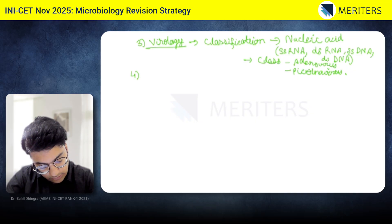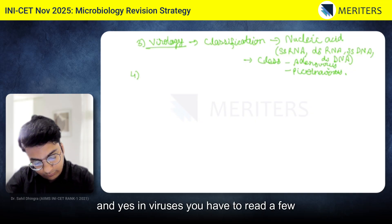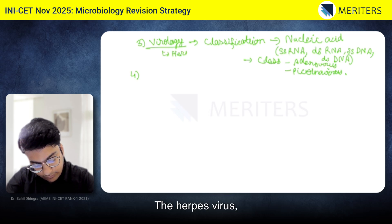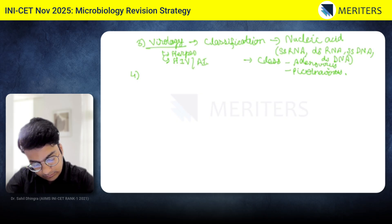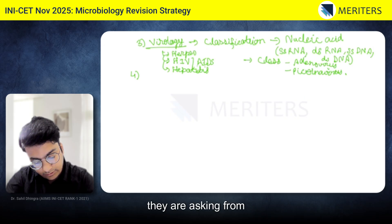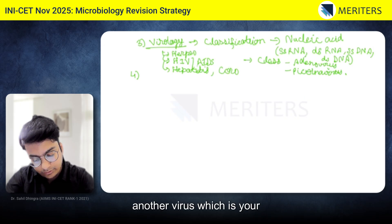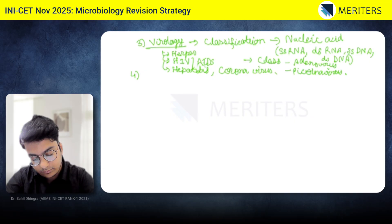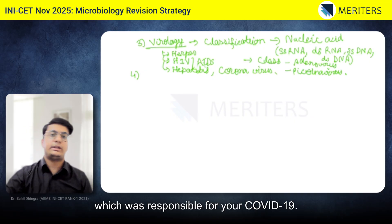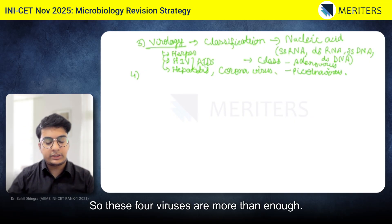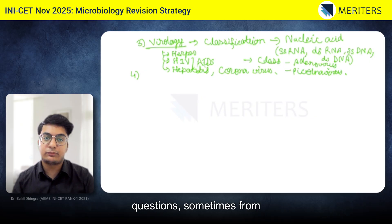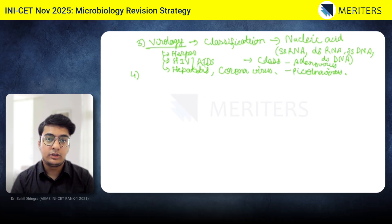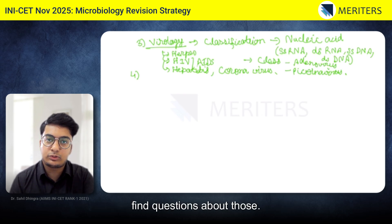In viruses, you have to read a few viruses in detail: the herpes virus, HIV/AIDS, and the hepatitis virus. After 2020, they are also asking about the coronavirus responsible for COVID-19. These four viruses are more than enough. They sometimes ask a few questions from rabies virus, but those are bouncer questions and you will find them in past repeats.